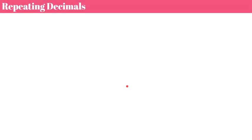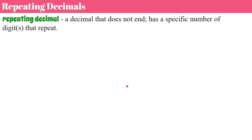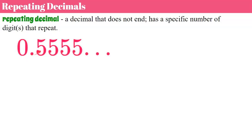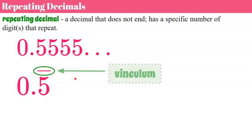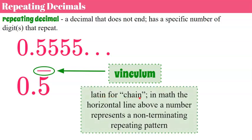Now let's talk about repeating decimals. A repeating decimal is a decimal that does not end and has a specific number of digits that repeat. For example, 0.5555... — the three dots tell you it extends infinitely and the fives keep going; it never ends. We can also write this as 0.5 with a repeating bar on top. That repeating sign is called a vinculum — a Latin word for chain — and in math the horizontal line above the number represents a non-terminating repeating pattern.